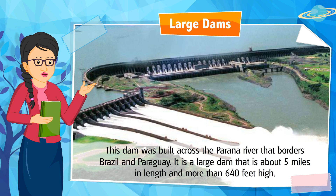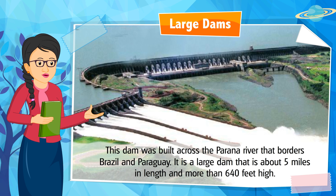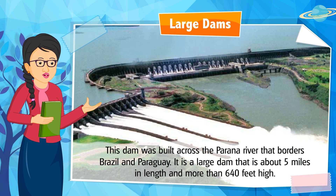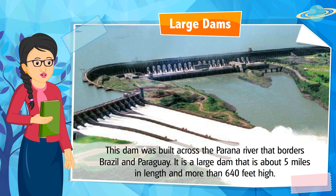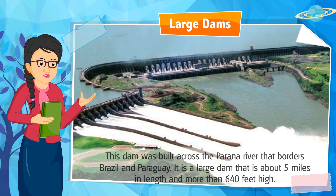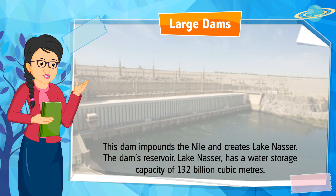This dam was built across the Paraná River that borders Brazil and Paraguay. It is a large dam that is about 5 miles in length and more than 640 feet high. Can you identify the name? It is Itaipu Dam.